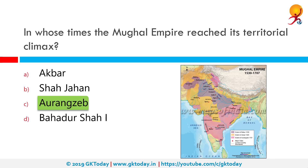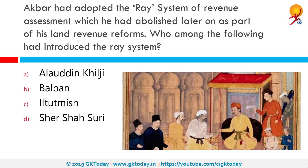Akbar had adopted the Raz system of revenue assessment, which he later abolished as part of his land revenue reforms. Who among the following had introduced the Raz system? The correct answer is Alauddin Khilji. No change was made until Akbar's 10th year of reign, that is 1566, after which it was changed into a single price list.